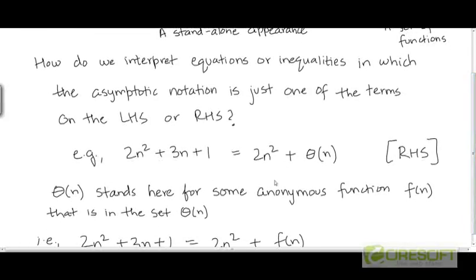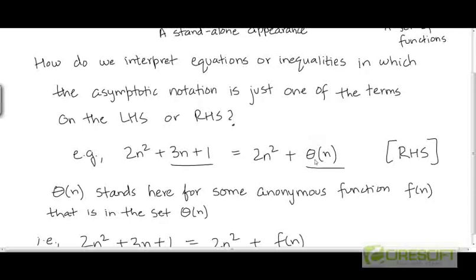The way to interpret this equation is: 2n-squared plus 3n plus 1 is equal to 2n-squared plus some function in the set theta of n. Theta of n is a set of functions, and what we are doing in this equation is replacing 3n plus 1 by theta of n — perhaps because we are not concerned about the exact form of the lower-order terms. We are just concerned that the lower-order terms grow at the rate of theta of n.